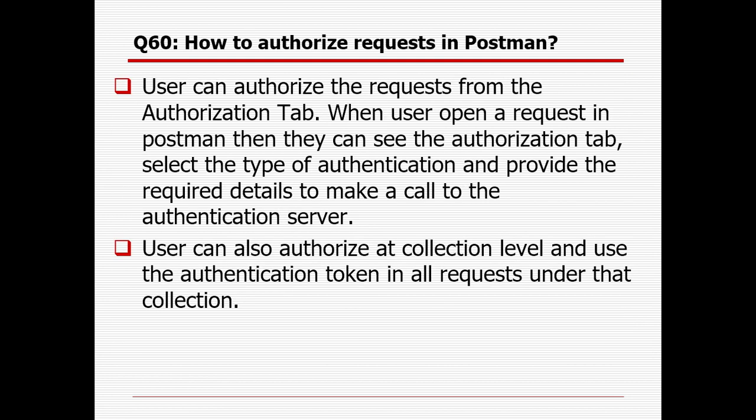How do you authorize a request in Postman? Users can authorize a request from the Authorization tab when they select a request in Postman. They can then see the Authorization tab, select the type of authentication, and provide the required details to make a call to the authentication server. Users can also authorize at the collection level and use the authentication token in all requests under that collection.